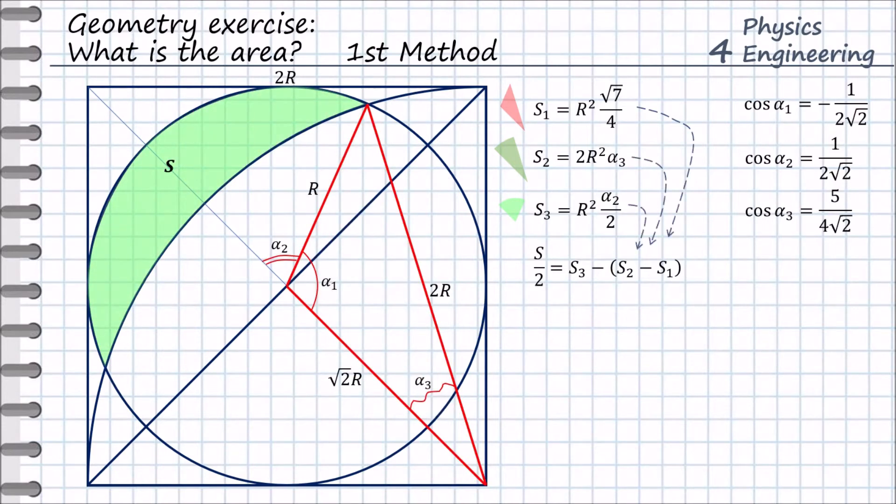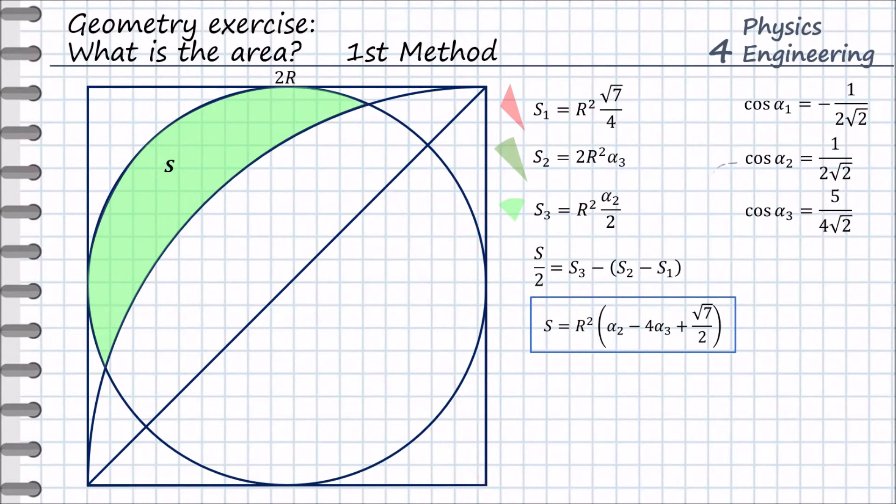Now we can substitute s1, s2, and s3 into the equation for the s area. We get the following formula, and then the angles alpha2 and alpha3. Now we get the final formula for the s area.